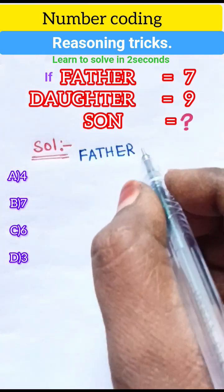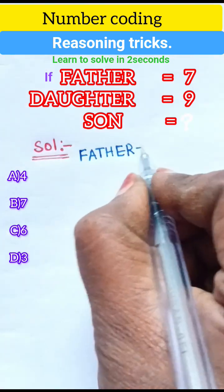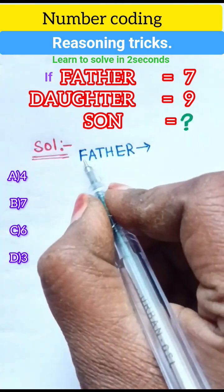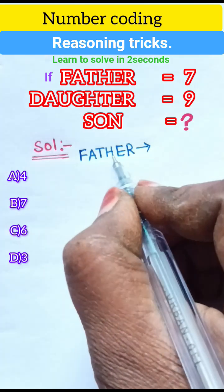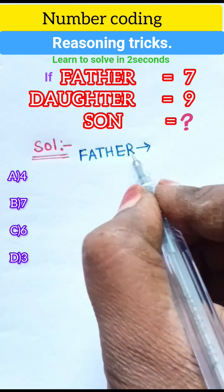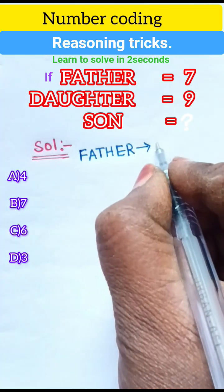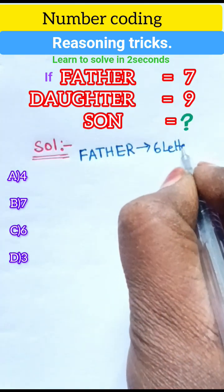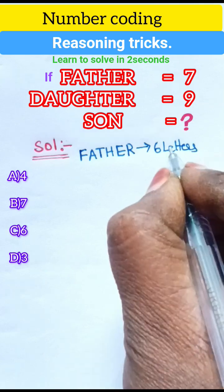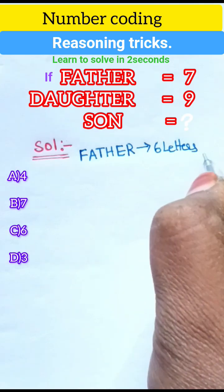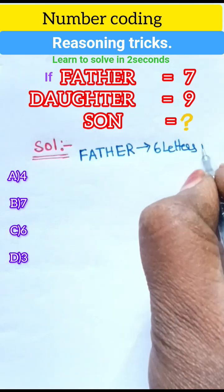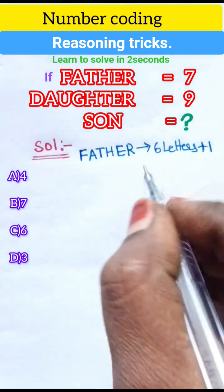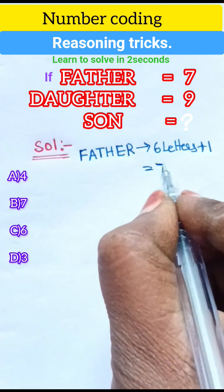So first, father. Here any letters are 1, 2, 3, 4, 5, 6. So 6 letters are there. And plus 1 are. So total length is 7.